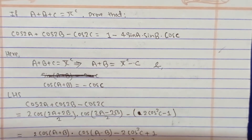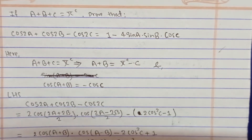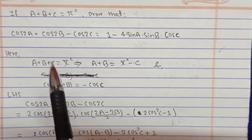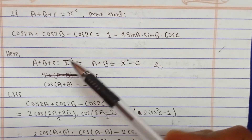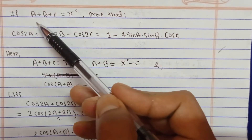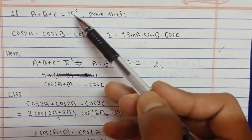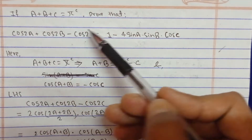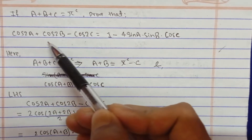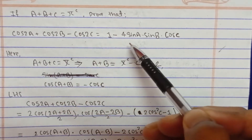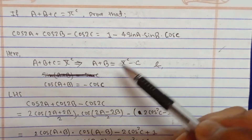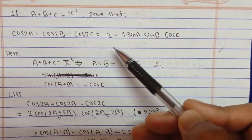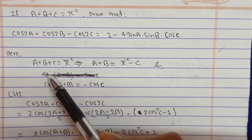Hello students, today I have a question from trigonometry — conditional trigonometric identities. We have to prove the conditional trigonometric identity. The condition is A plus B plus C equals pi radian, and we have to prove that cos2A plus cos2B minus cos2C equals 1 minus 4 sinA times sinB times cosC.